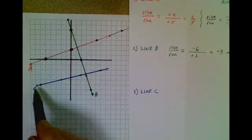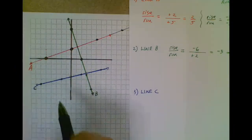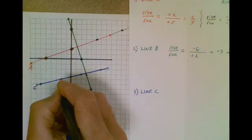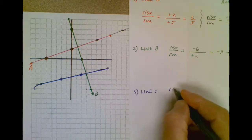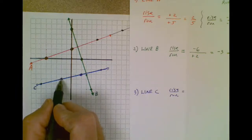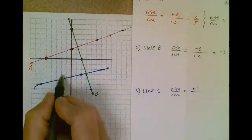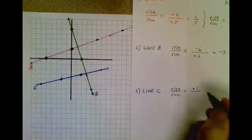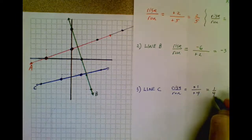Alright, let's finish up with line C. In this case, I might have to be a little bit more thoughtful about the points I pick. I'm going to pick this point and this point. To go from here to here, I do a rise over a run. Rise is the change, whether it's up or down in my y value. So I have a rise of positive one and a run of positive four. So my slope of that line is one fourth.